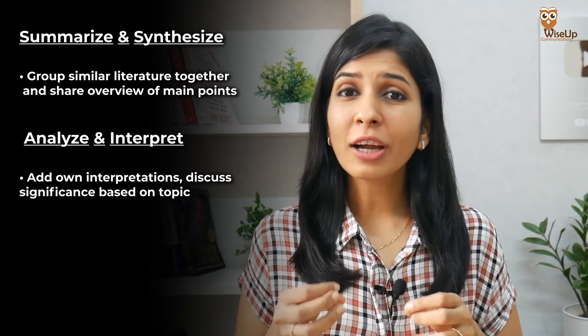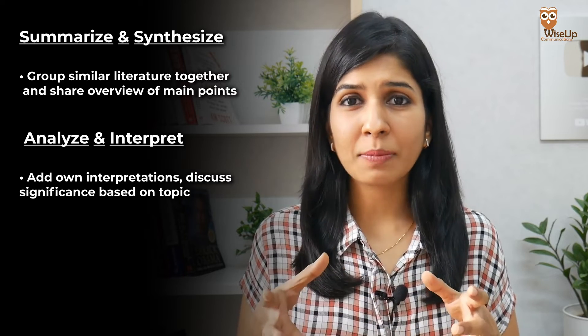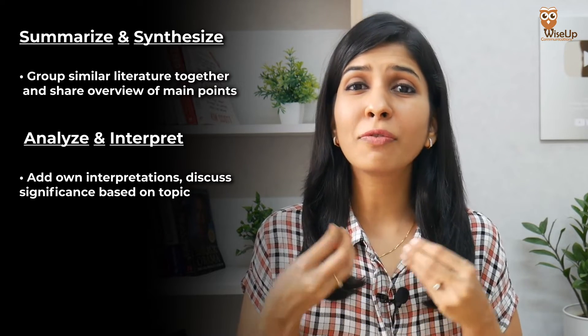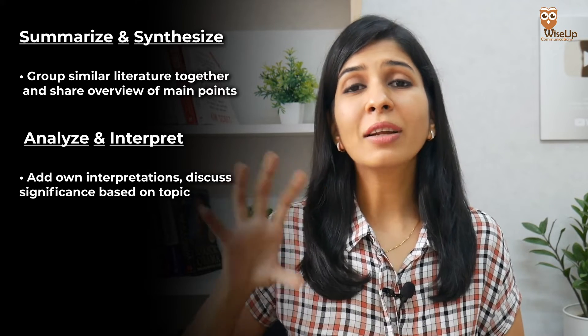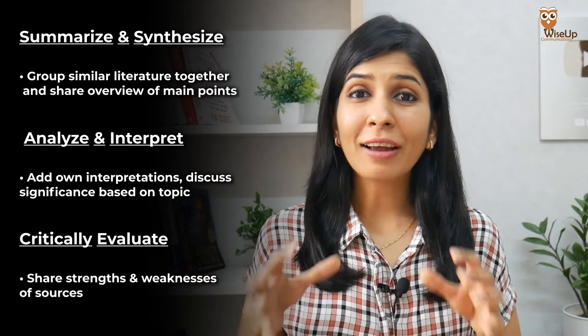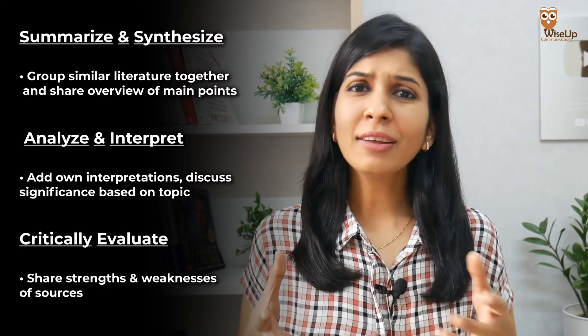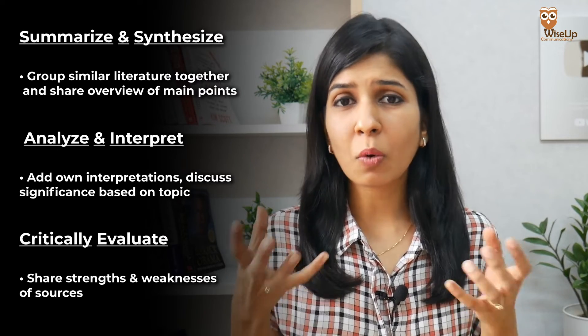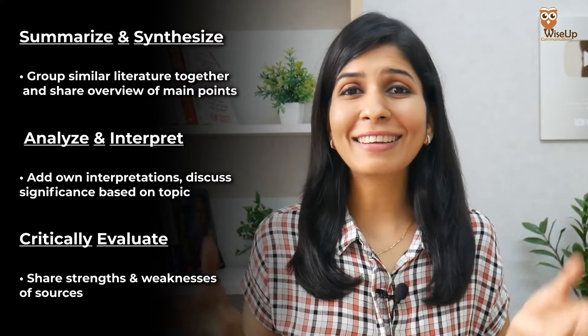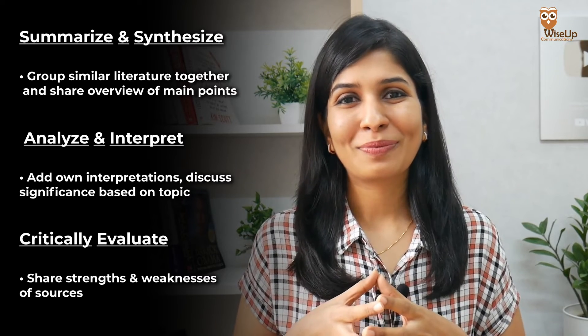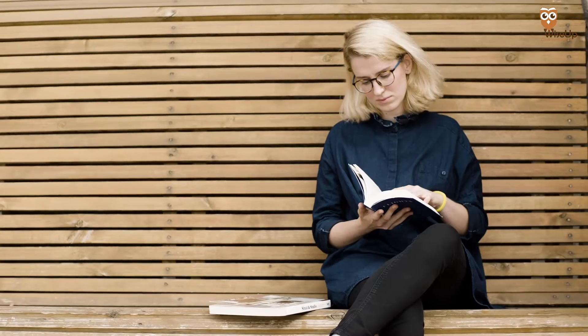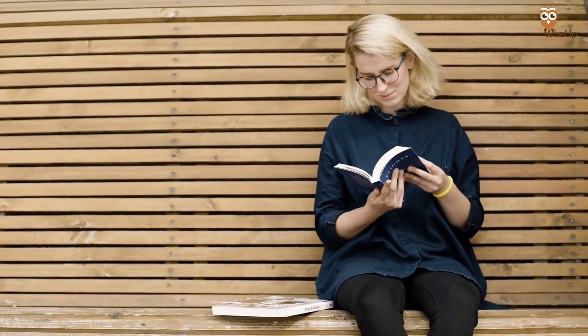First, summarize and synthesize: try to group similar literature together and then share the main points of each source. Second, analyze and interpret: try to share your interpretation wherever possible, and also discuss the significance of the findings of these different research papers when it comes to your own topic. And finally, critically evaluate: share the strengths and weaknesses of the different sources and research papers to give a complete evaluation in your literature review. In this way, you will be able to analyze the work of others and go to a deeper level of understanding rather than simply stating their findings.